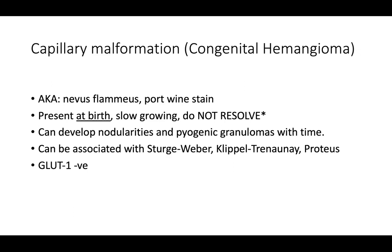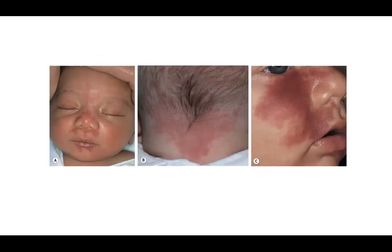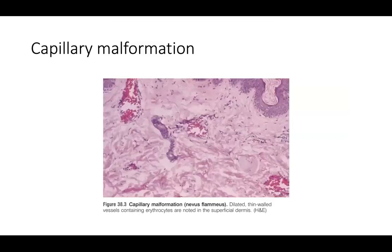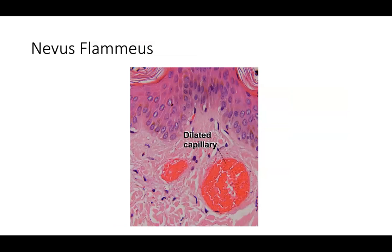Capillary malformations, also known as nevus flammeus or port wine stain, are present at birth, slow growing, and do not resolve. They can develop nodularity and pyogenic granulomas with time and may be associated with Sturge-Weber, Klippel-Trenaunay, and Proteus syndromes. GLUT1 is negative by definition. Here you see an example of a capillary malformation with a flat patch-like growth pattern. Unfortunately, these can develop significant nodularity. On histopathology, it is composed of dilated thin-walled vessels containing red blood cells in the superficial dermis.